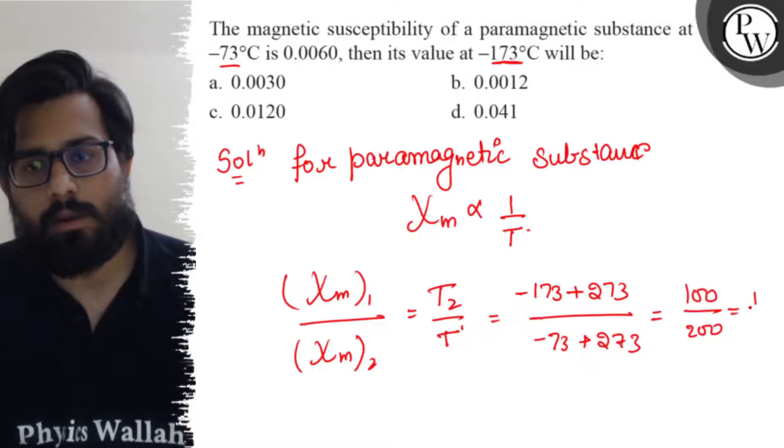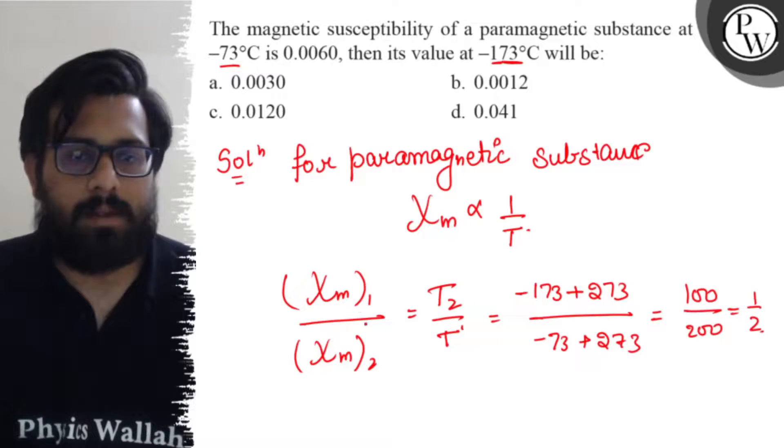Solving it, you get a value of 1 by 2. So susceptibility in your first case upon susceptibility in your second case comes out to be 1 by 2.